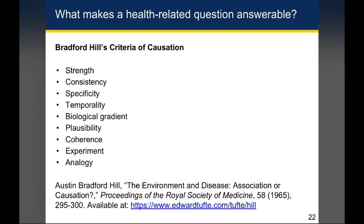Another aspect of the analysis and the findings that will make your health-related question answerable relates to Bradford Hill's criteria of causation. I encourage you to go to the link at the bottom of this slide to read this article for yourself. What Bradford Hill does in this article is basically lay out a set of criteria that can either lend support to the idea that the relationship you find might be causal, or take away from that and therefore make it unlikely that the relationship you found is causal.